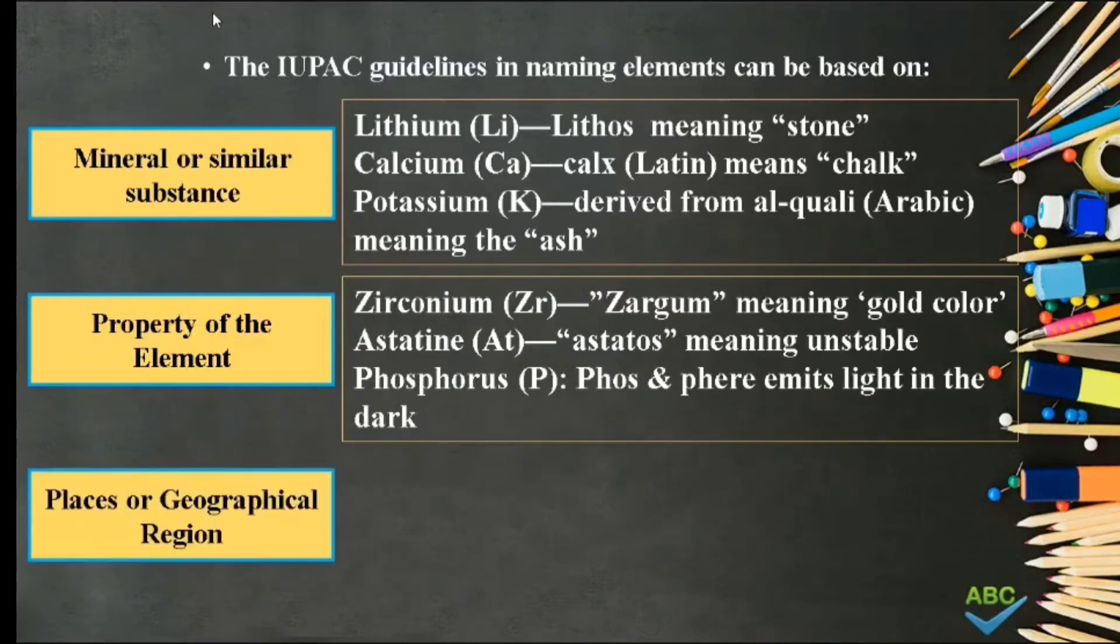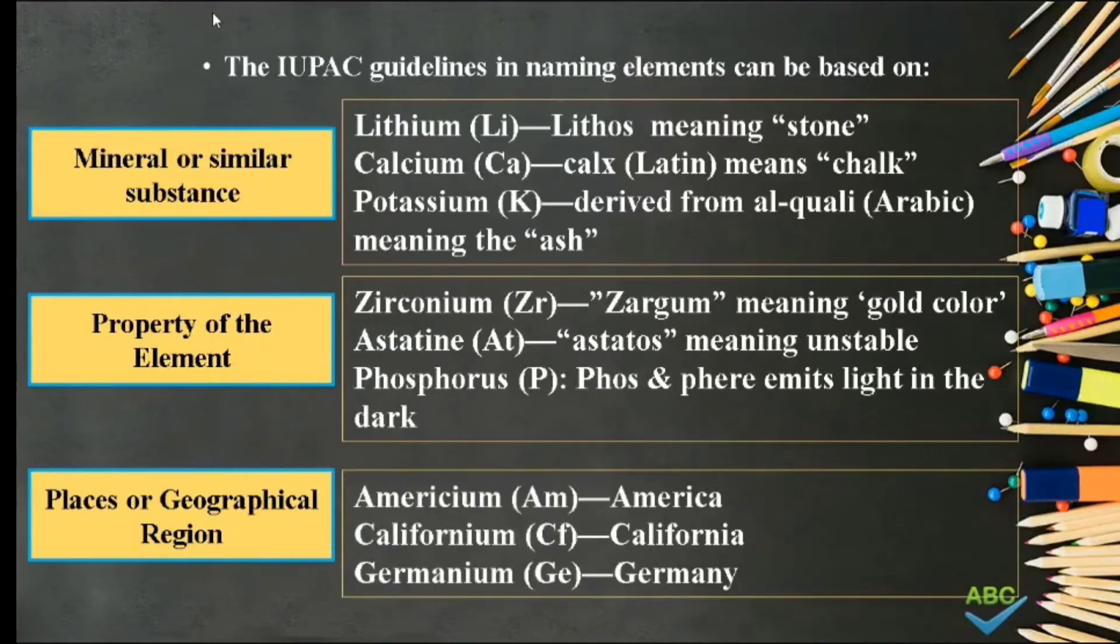Number 6. Based on places or geographical region. Examples of this are Americium, named after America. Californium, after California. And Germanium, after Germany.